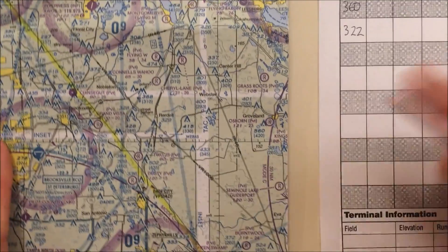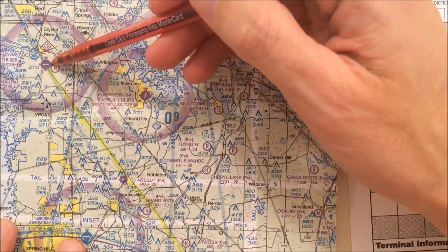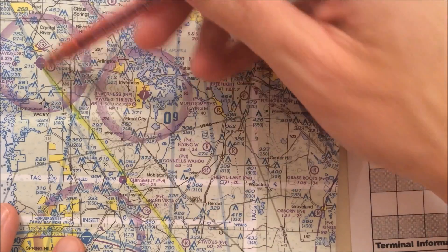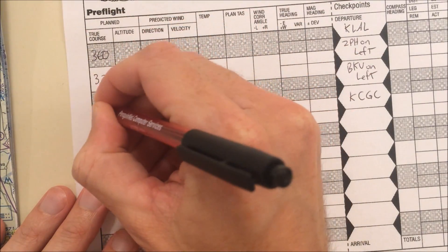Now you'll notice that between my second and my destination here, my second checkpoint and my destination, my true course doesn't change. The line doesn't turn. So I can just fill in the true course for the next block right now.